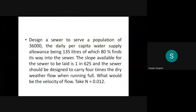Good morning everyone. In the previous class we were discussing one problem where we solved it using the Chezy/Seals equation. We calculated Q equal to Q1 plus Q2, that is sewage flow and storm water flow. After that we calculated the velocity using the Seals equation, then calculated the bed slope. We got the bed slope of one in 1040.